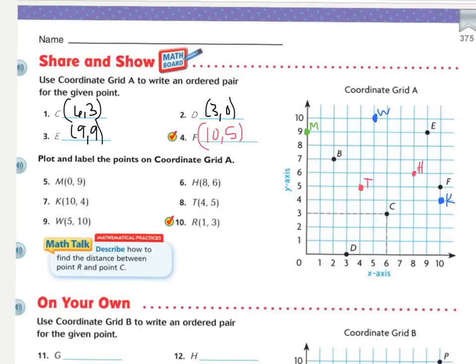And then number 10, R. I go, the first number is our X coordinate. And our second one is our Y coordinate. We go over 1. There's 1. And then we go up 3. And that's where they cross. And so, that is R. Let's look at this math talk real quick. It says, describe how to find the distance between point R and point C. Point R and point C, they're on the same Y line. They're both at 3. 3 is their second number. So, you can either count them or which coordinate would you subtract? You would subtract your X. We would have 6 and 1. So, their distance is 6 minus 1, which is 5. Alright, you may now work on your other tasks as assigned.